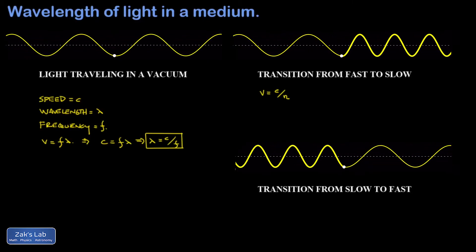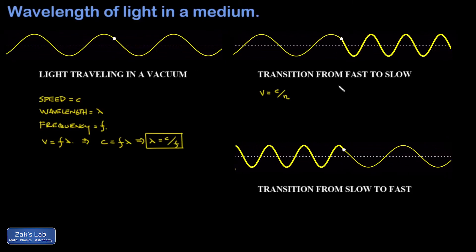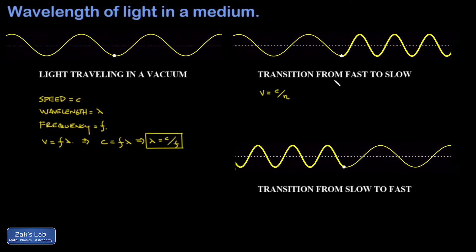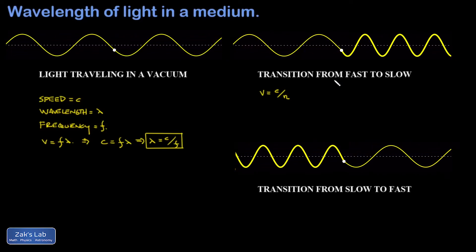but notice that the frequency of the wave doesn't change. Again, we're tracking that white spot on the wave and watching it go up and down. The frequency of the light in a vacuum is exactly the same as the frequency of the light when it propagates into the material.